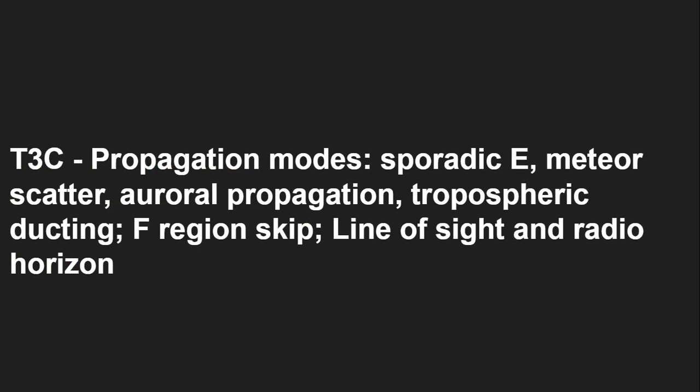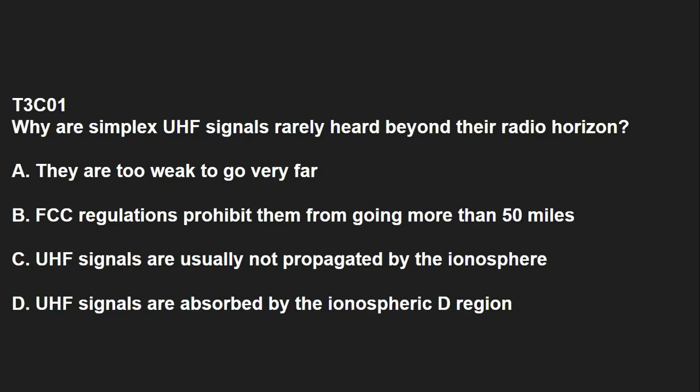T3C covers propagation modes: sporadic E, meteor scatter, auroral propagation, tropospheric ducting, F-region skip, line of sight, and radio horizon. T3C01: Why are simplex UHF signals rarely heard beyond the radio horizon? UHF signals are usually not propagated by the ionosphere.